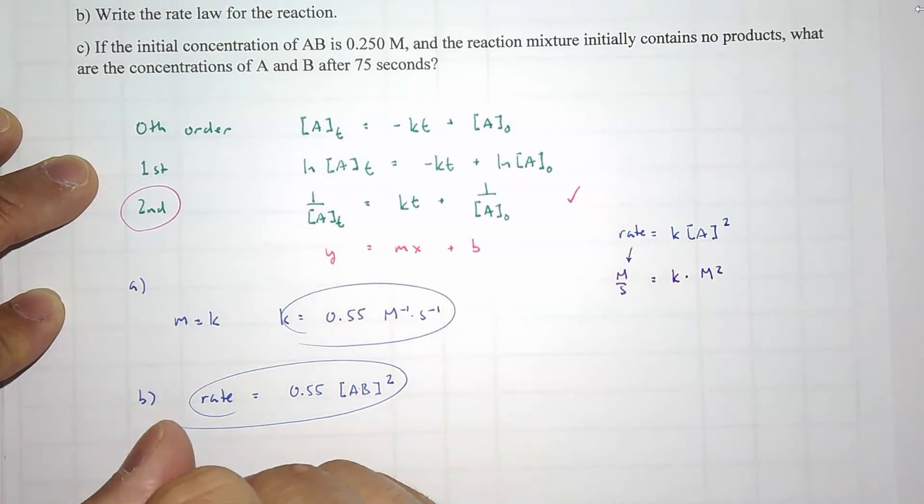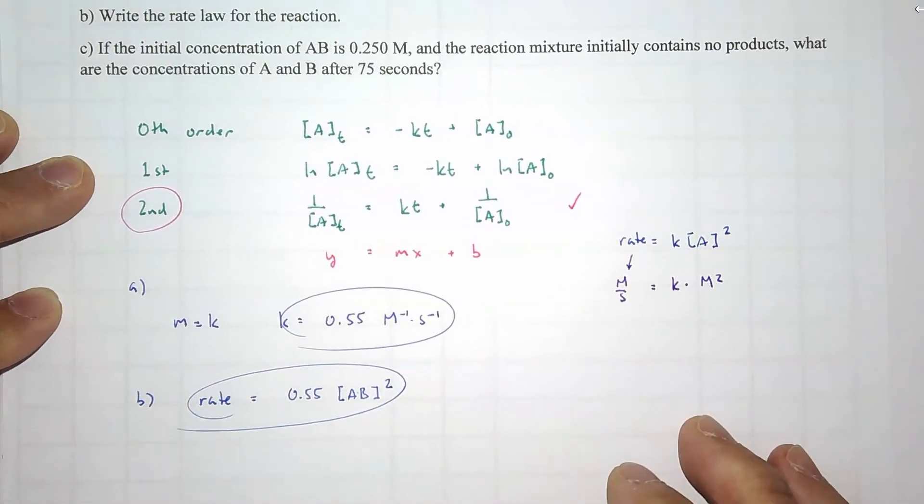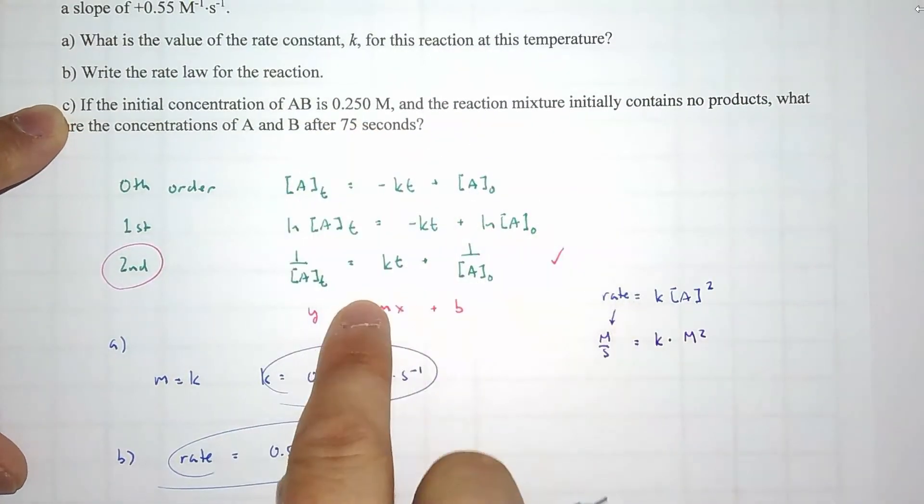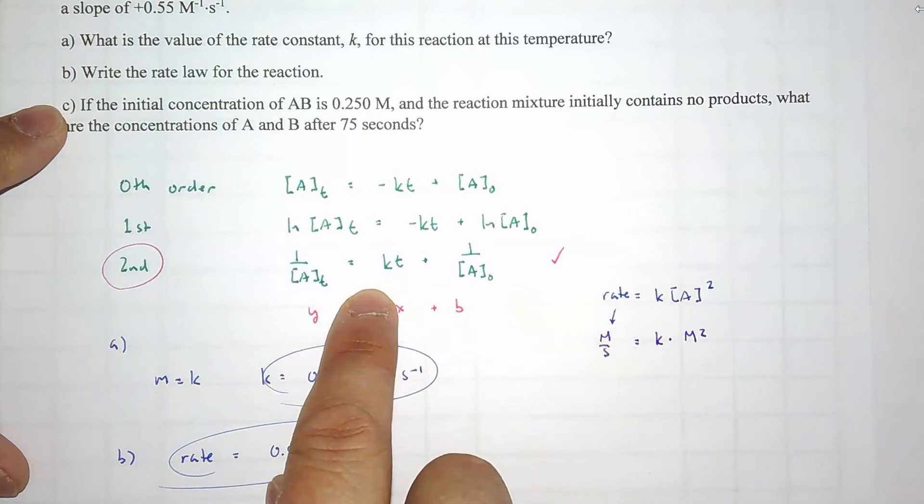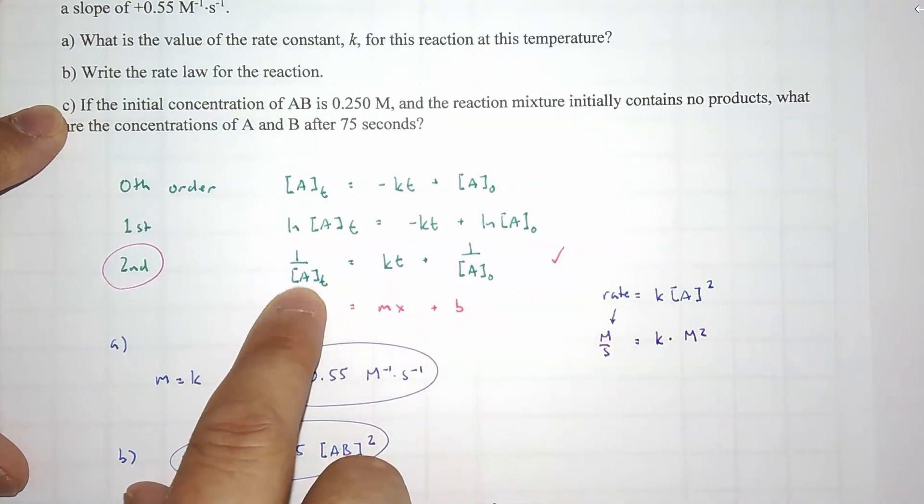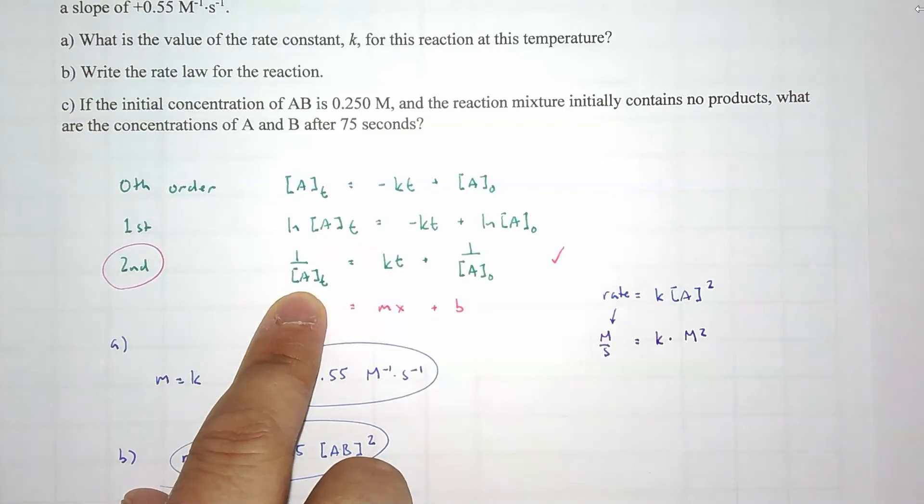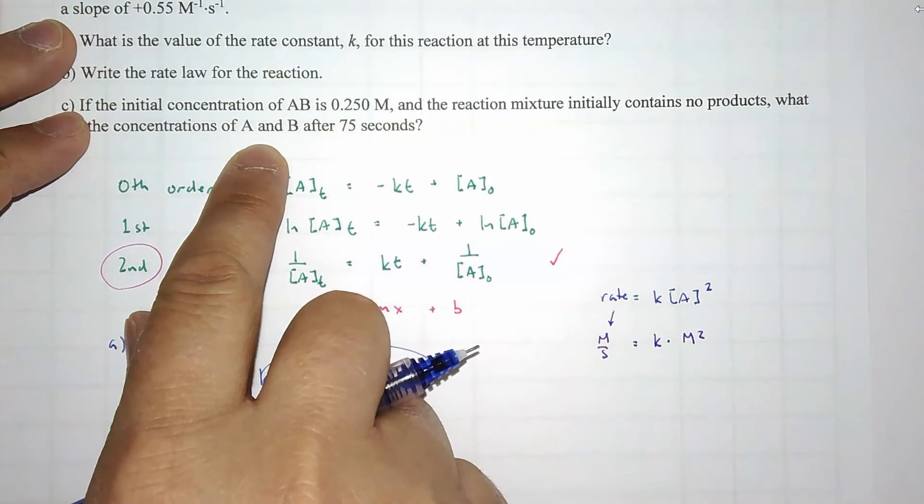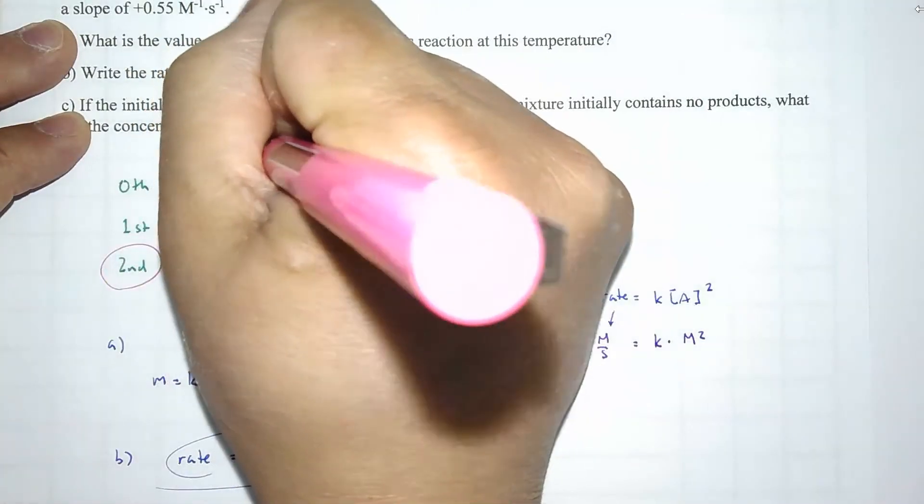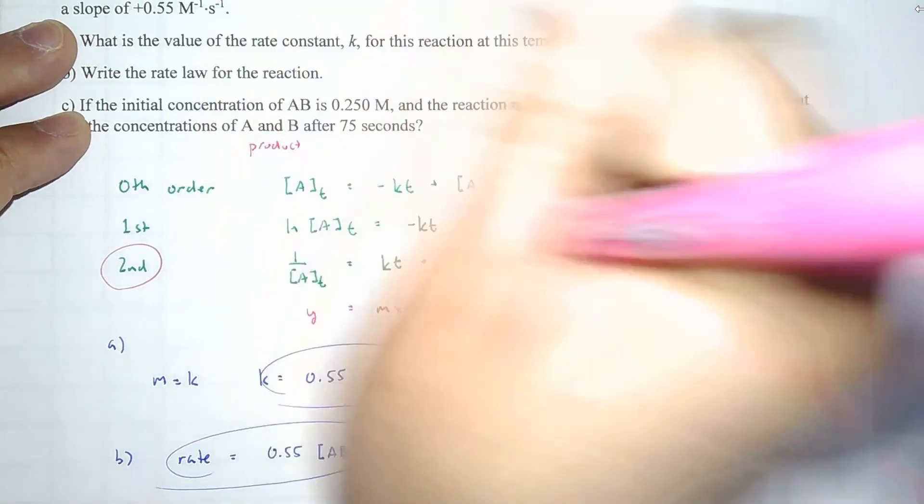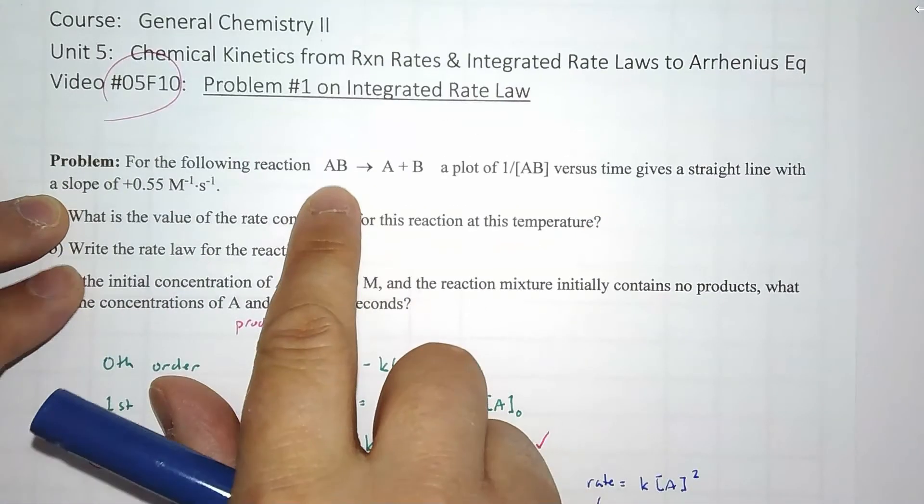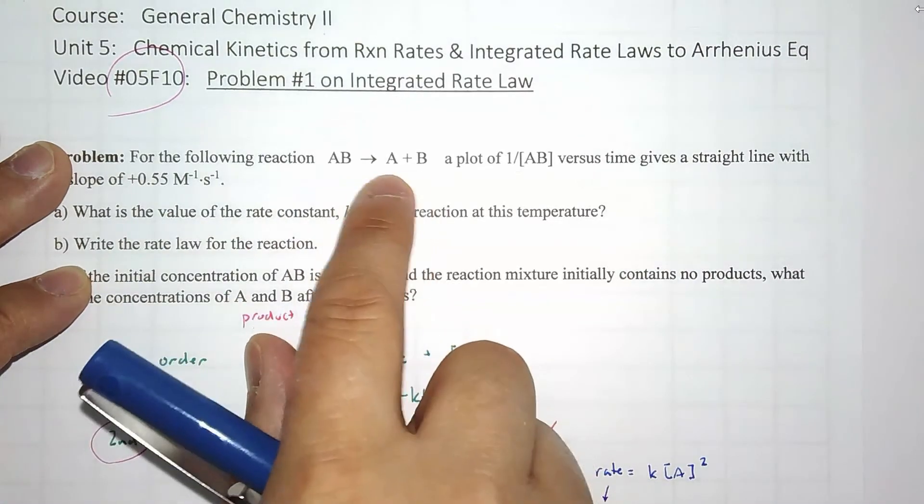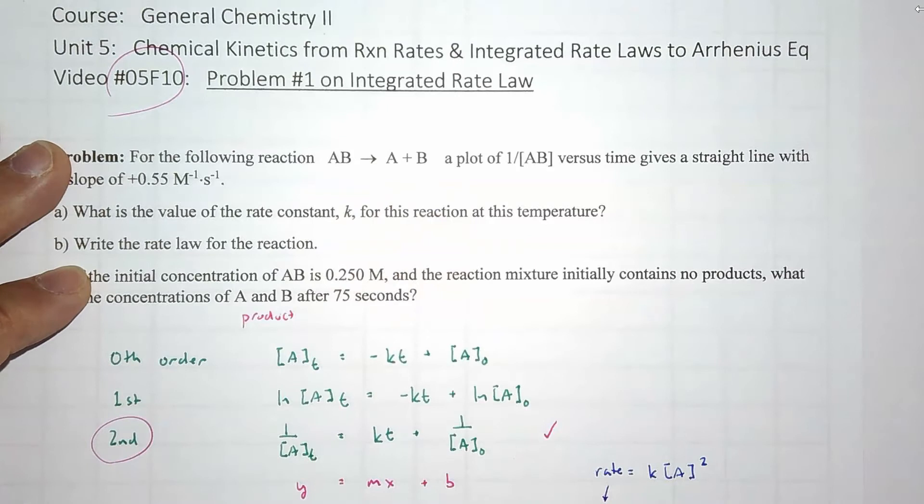And finally, C. So C is interesting because what we can get from the integrated rate law is the concentration of AB, the starting material at a certain time point. But they want the concentration of A and B, the products. Not a big deal. If we know the starting material concentration, we know the concentration of A plus B at a certain time point.